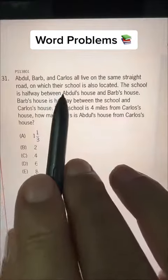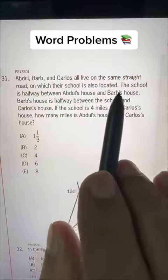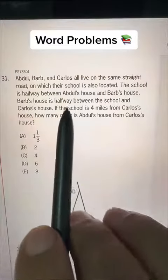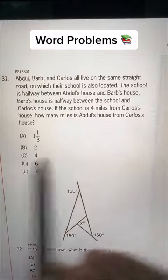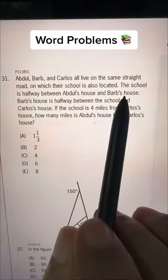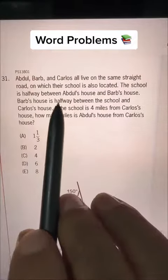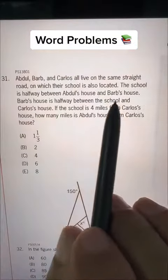Abdul, Barb and Carlos all live on the same street road on which their school is also located. So they are living in a straight line. The school is halfway between Abdul's house and Barb's house.